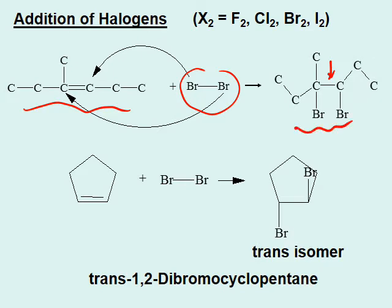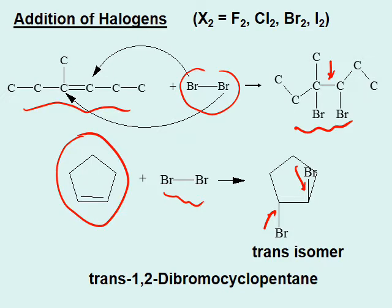On the other hand, in the second compound, which is the cyclic compound with a double bond — that's a cyclic alkene — here you'd understand what kind of addition has taken place. The halogen gets bonded such that one gets bonded from the bottom and the other one from the top. When there is restricted rotation, you would expect a trans isomer.